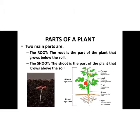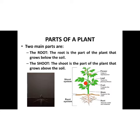Hi children, let us continue with our chapter. By the way, have you revised your last day's portion? Good. Now let's begin. Parts of a Plant. We already have studied about the two main parts of a plant. They are the root and the shoot. In our last class, we discussed about the root. Now, today we can learn about the shoot.